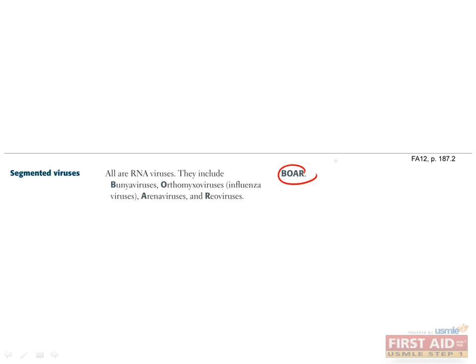Use the BOAR mnemonic to remember that bunyavirus, orthomyxovirus, arenavirus, and reovirus contain segmented genomes. These viral genomes are cleaved into two or more smaller, physically separate segments of nucleic acid. When the virion attaches to and infects another cell, these segments come together, reassemble, and join to form a complete genome.